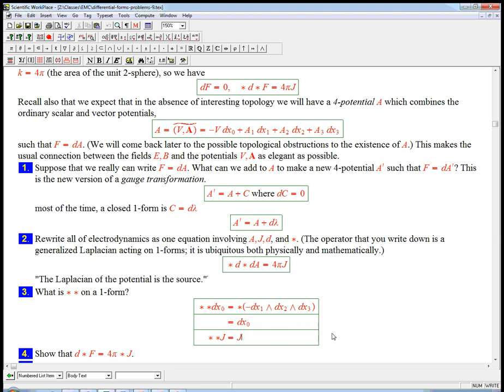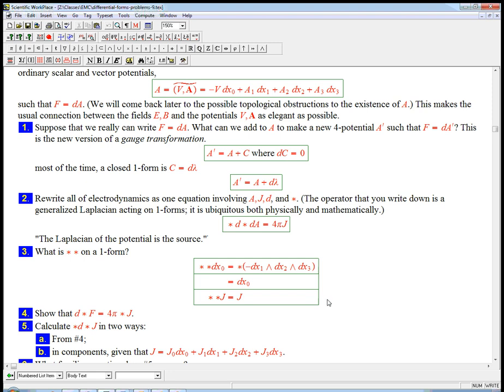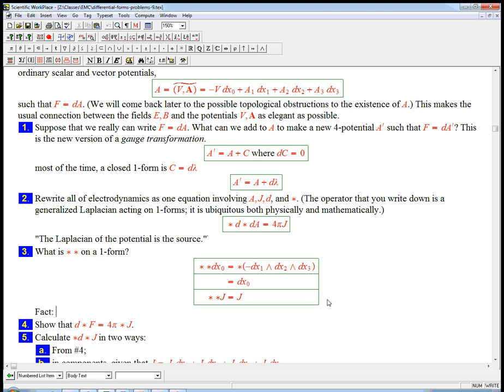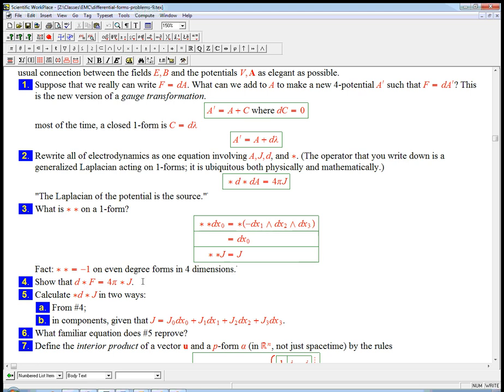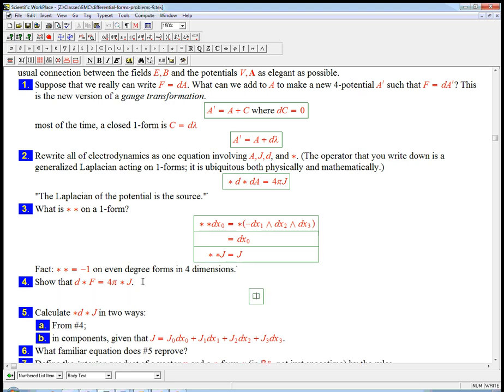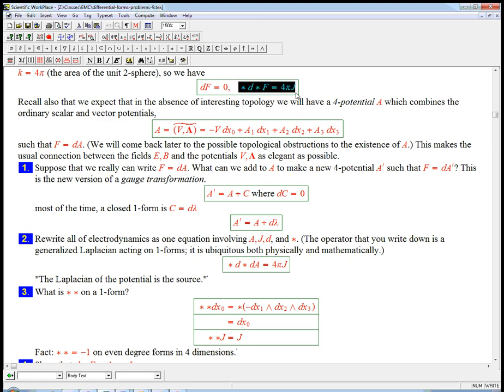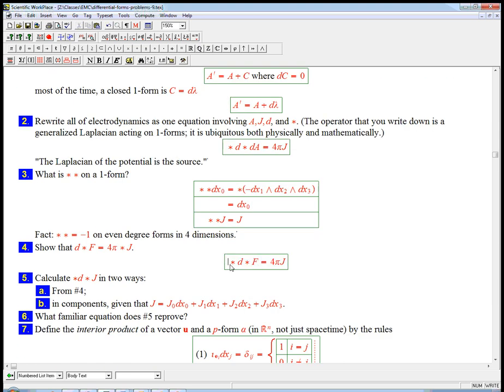If you look closely at two forms from the last video, it's not hard to figure out that star star is minus one on two forms, and in fact even forms, even degree forms in four dimensions. And it's plus one on one and three forms. So, that means we can, this is a really easy problem, we can just take star D star F equals four pi J, and I'm going to star both sides. And the star is linear, so I can move that in, and then I can just erase the star star because that's one.